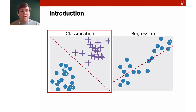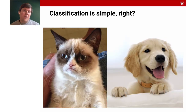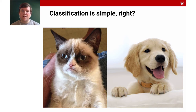Our focus today is on classification, and it's quite intuitive. Imagine a machine learning system that takes images as input and then decides whether something is a cat or a dog. Conceptually, it's quite simple.